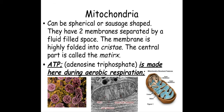Mitochondria — you do need to be aware of the internal structure. It is a double-membraned organelle. We have the inside fluid called the matrix, and the inner membrane is folded into cristae — these flattened sacs inside which you can see clearly in a TEM image. It's really important to know, and very popular in mark schemes, that ATP is made here during aerobic respiration.